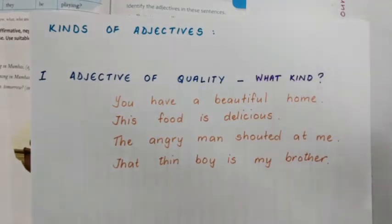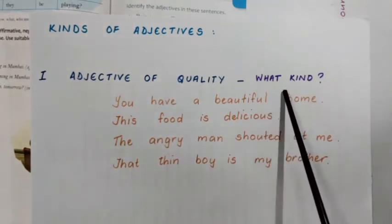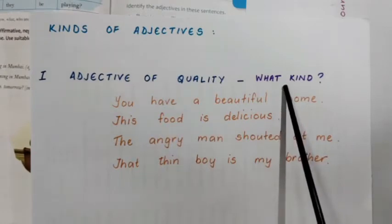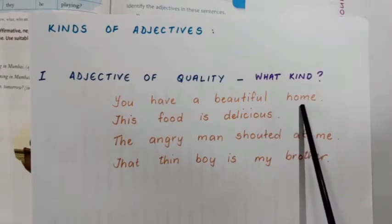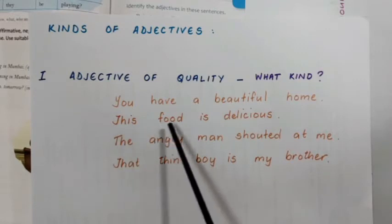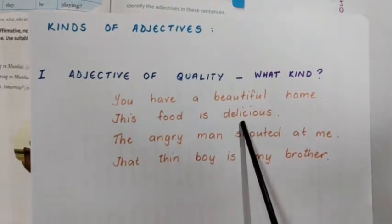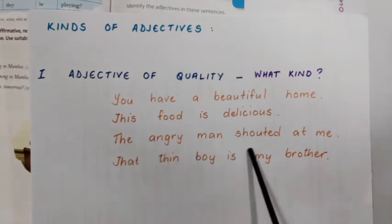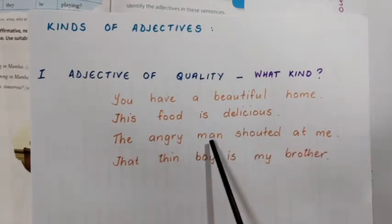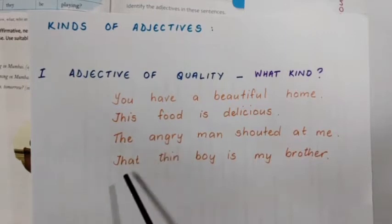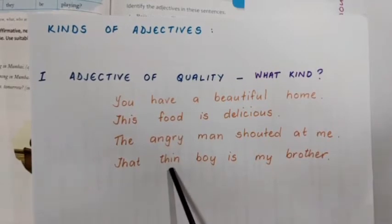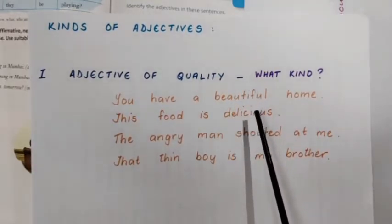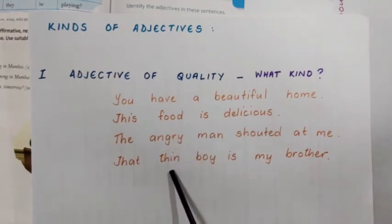To find out whether an adjective is an adjective of quality, we ask the question: what kind? 'You have a beautiful home' — what kind of home? Beautiful. 'This food is delicious' — what kind of food? Delicious. 'The angry man shouted at me' — what kind of man? Angry. 'That thin boy is my brother' — what kind of boy? Thin. So these are the adjectives of quality.